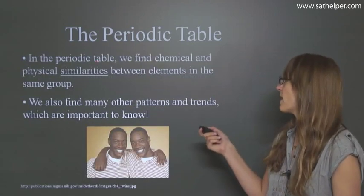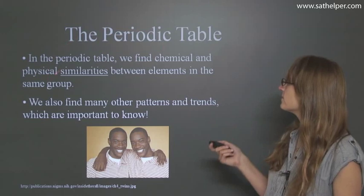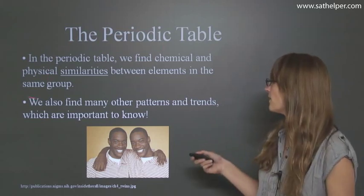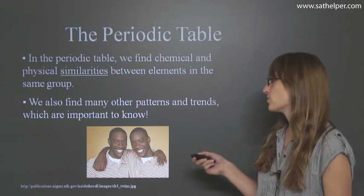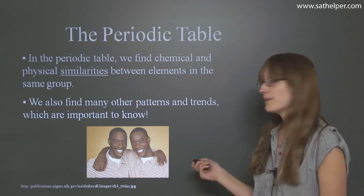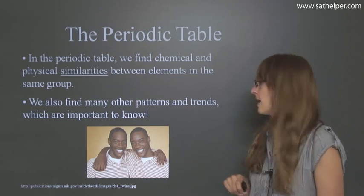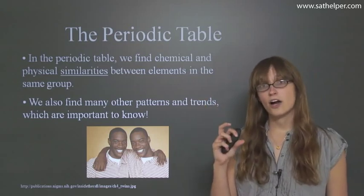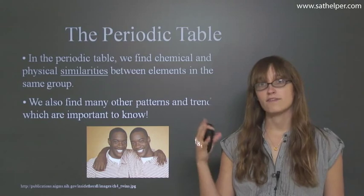In the periodic table, we find chemical and physical similarities between elements of the same group. We also find many other patterns and trends which are important to know. So here we have two guys that look the same. We'll be able to see in the periodic table a lot of times you'll have elements that aren't exactly the same but they behave very similarly.